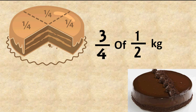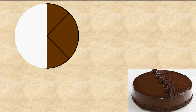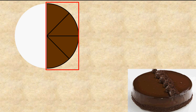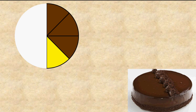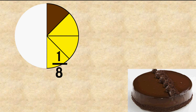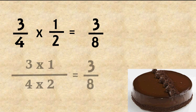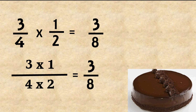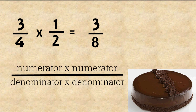Three-fourths of half kg means three-fourths multiplied by one-half. We divide the half kg into four equal parts — look closely, each part is one-eighth kg. So three parts means three-eighths kg. One-half multiplied by three-fourths gives three-eighths. We multiplied numerator with numerator and denominator with denominator.